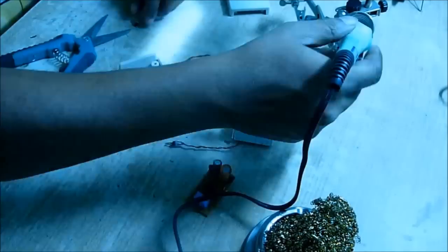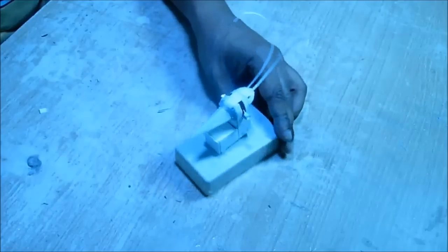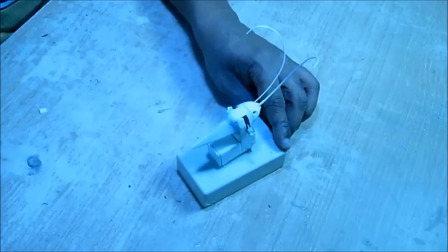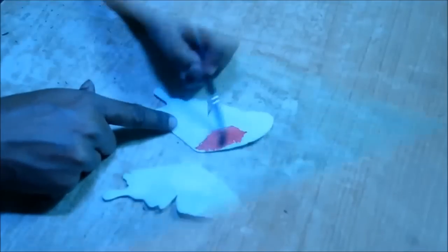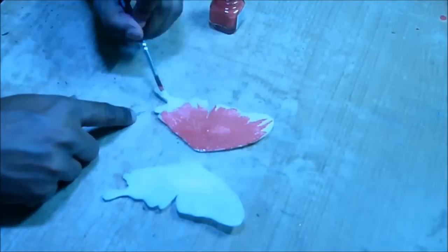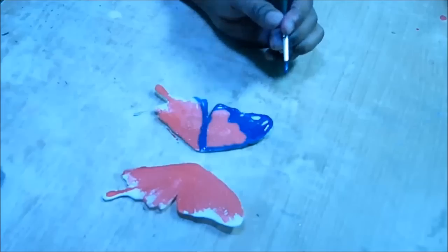Now let's make the wings. We cut the wings from a thermal plate in these shapes, as per the design you choose from the internet. Now color the wings.